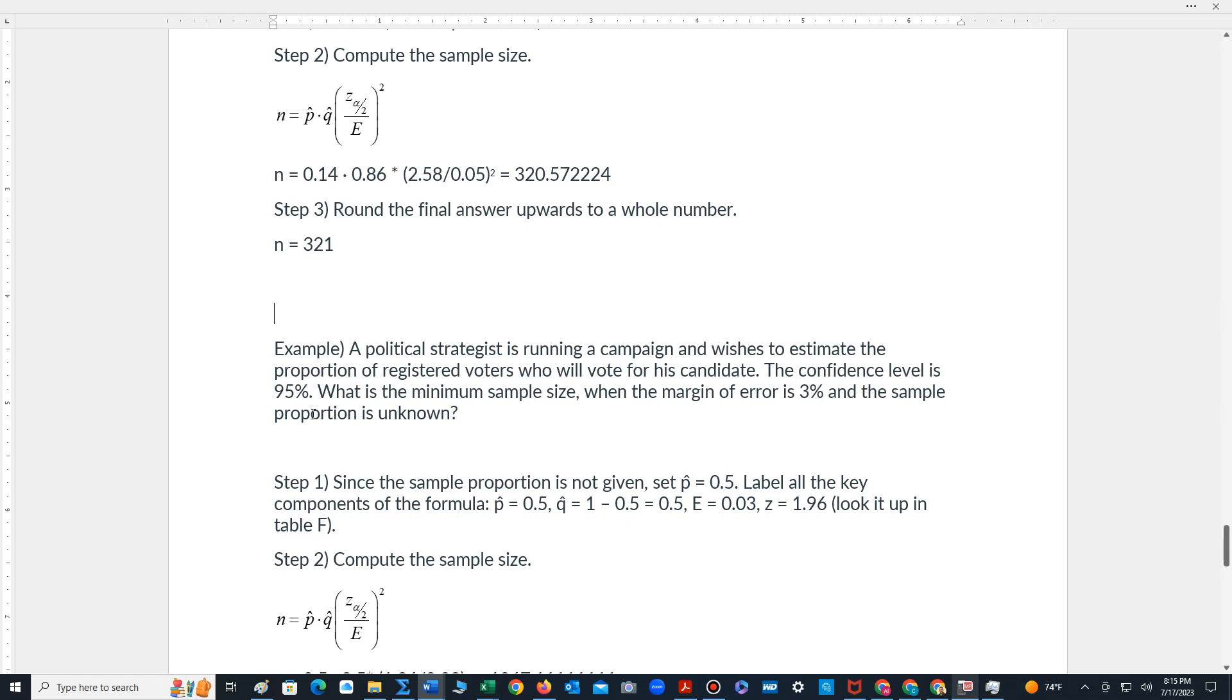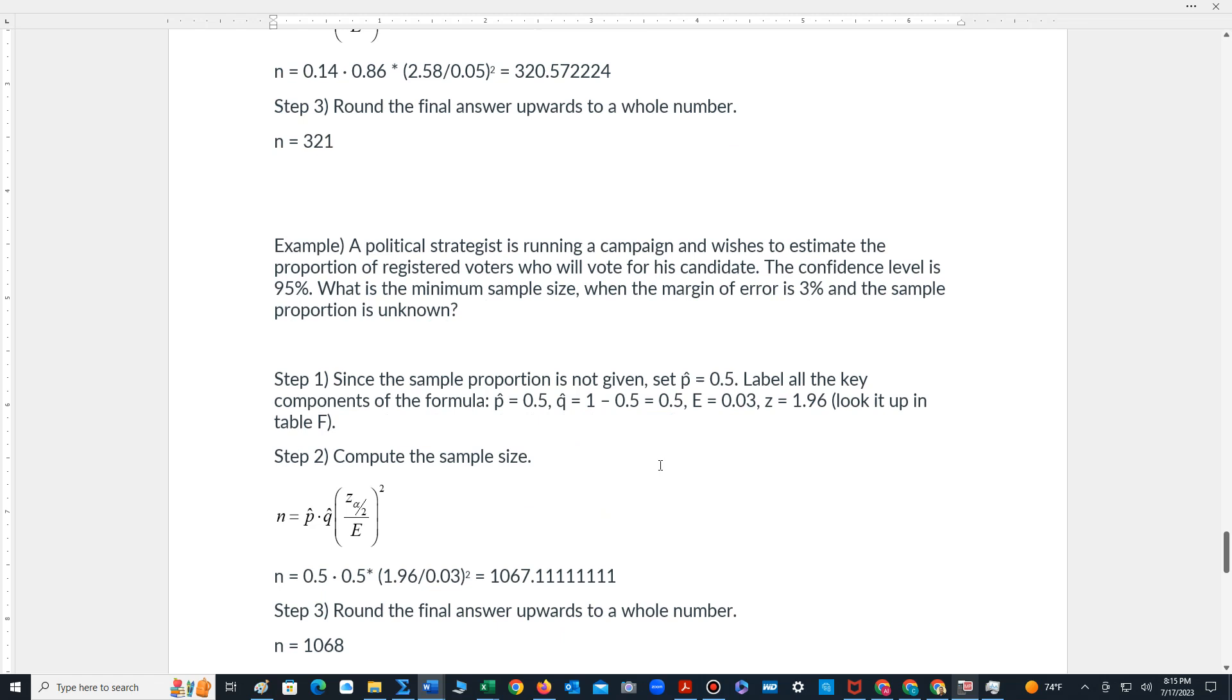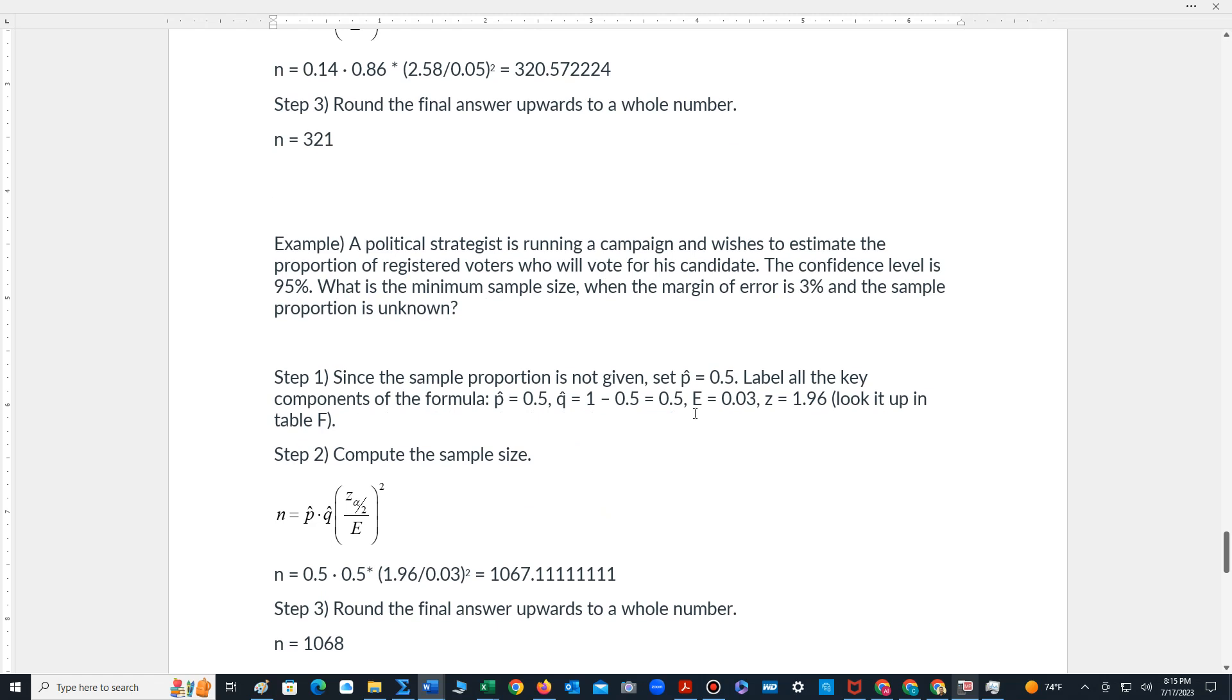Well when the sample proportion is unknown there's a standard measure we use. We set P-hat equal to 0.5. Now if P-hat is equal to 0.5 that means Q-hat is 1 minus 0.5 which is also 0.5. Margin of error is 3 percent converts to 0.03.